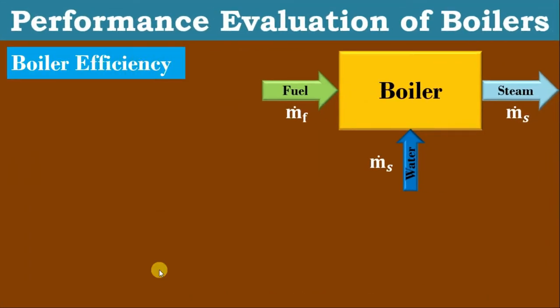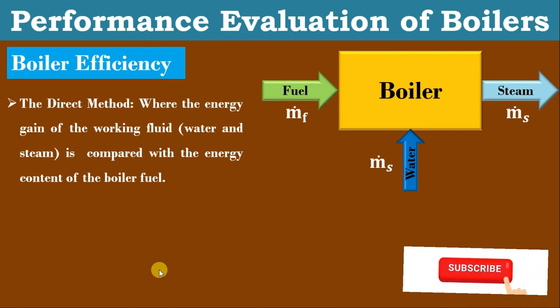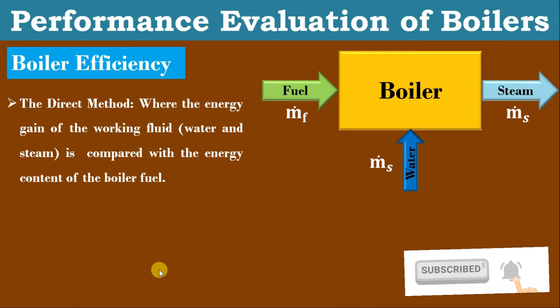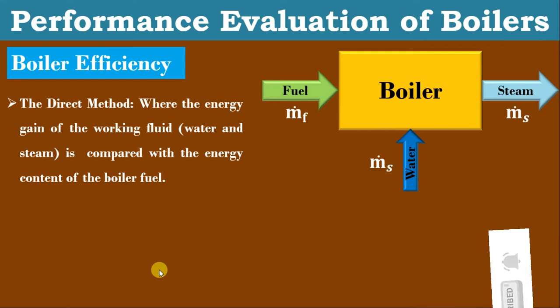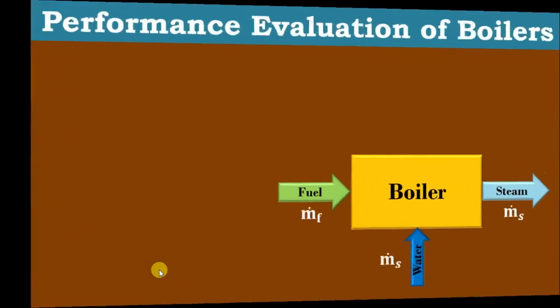Boiler efficiency can be classified into two categories. One is the direct method, the other one is the indirect method. The direct method is very simple: how much steam is generated, for that how much energy is consumed, divided by how much fuel is supplied. In the indirect method, we add all the losses and see how much total energy is available — that gives the indirect method efficiency. First, we will discuss about the direct method.